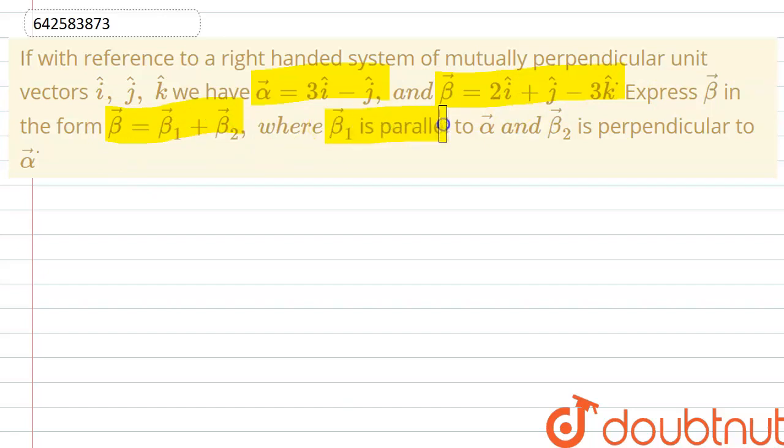Where beta 1 is parallel to alpha and beta 2 is perpendicular to alpha. So here we are given that the value of alpha vector is 3i minus j and we have beta as 2i plus j minus 3k.